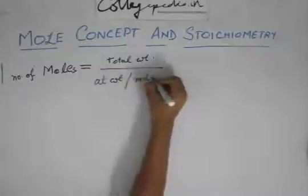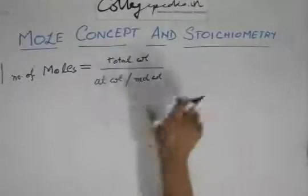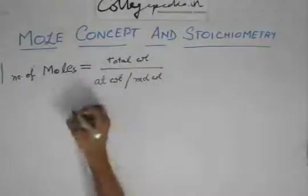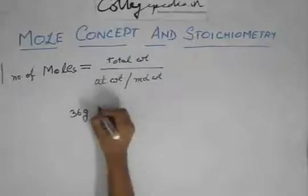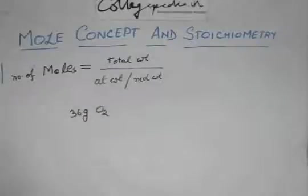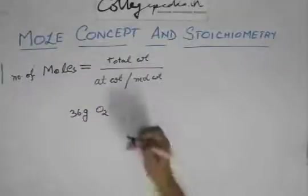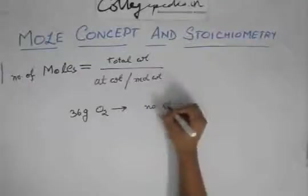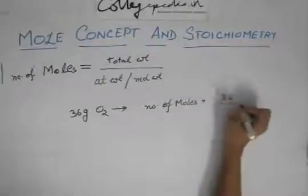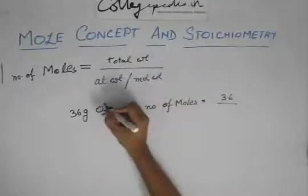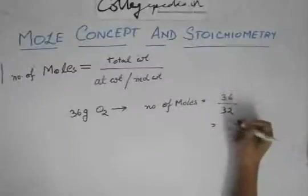So if you have, suppose, 36 grams of oxygen, how many moles of oxygen do you have? Simple question. The number of moles would be 36 divided by the molecular weight of oxygen. Because it is O2, it's 16 plus 16 equals 32, which would be 9 by 8 moles.